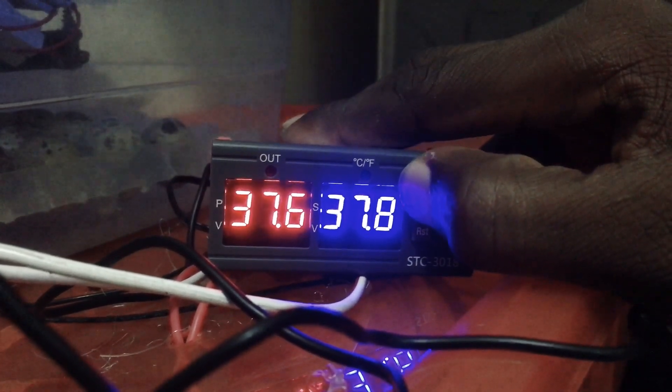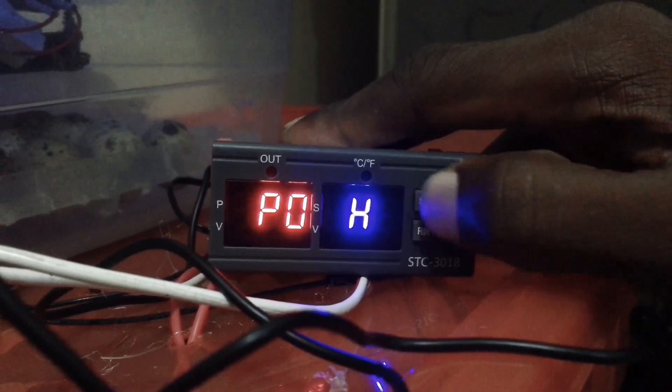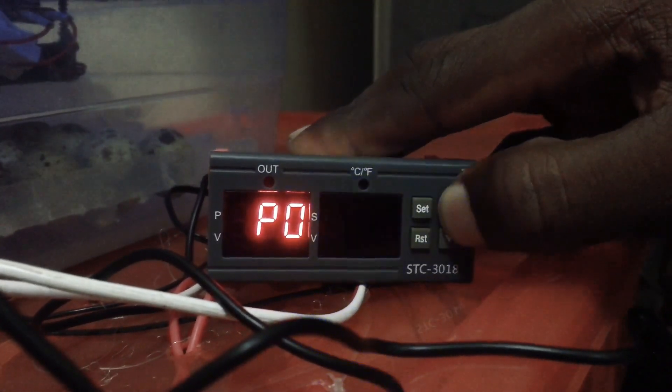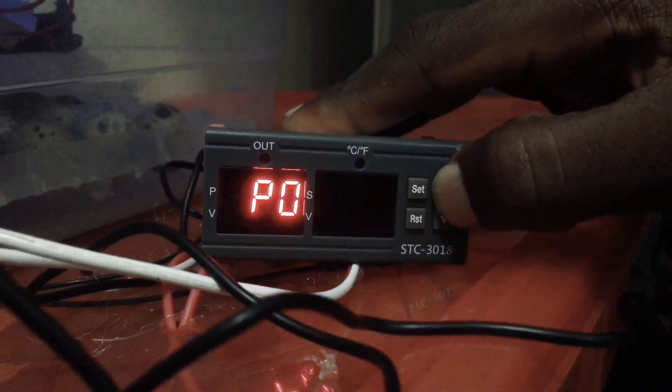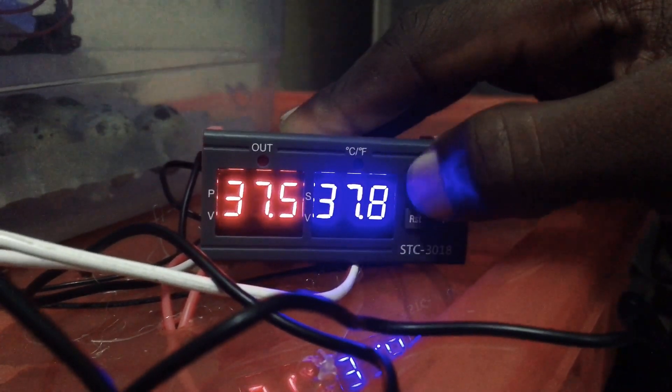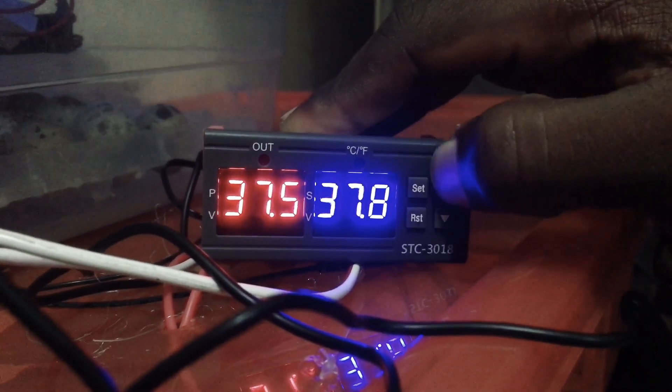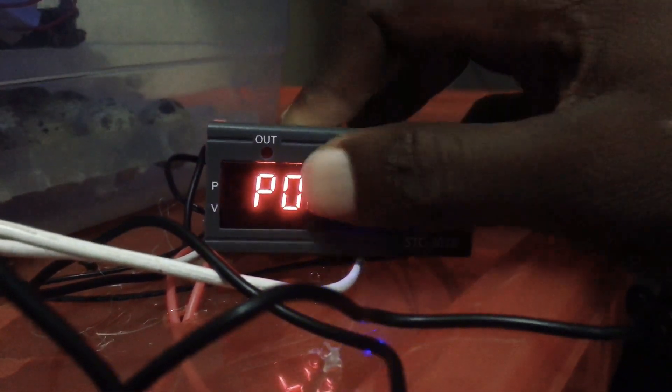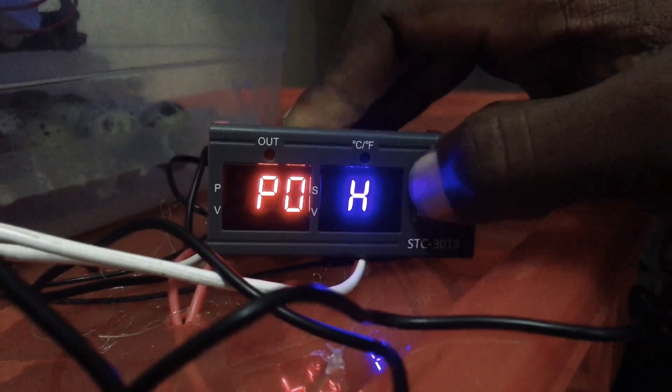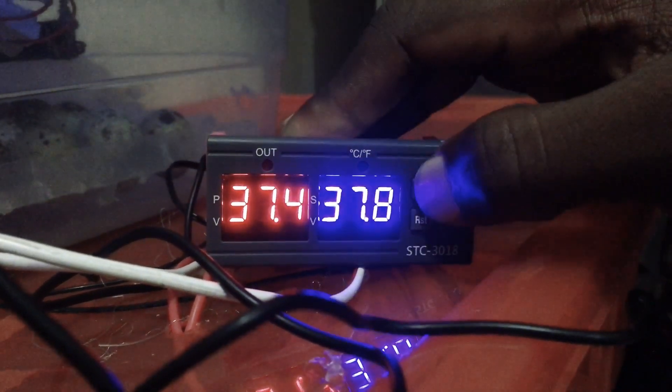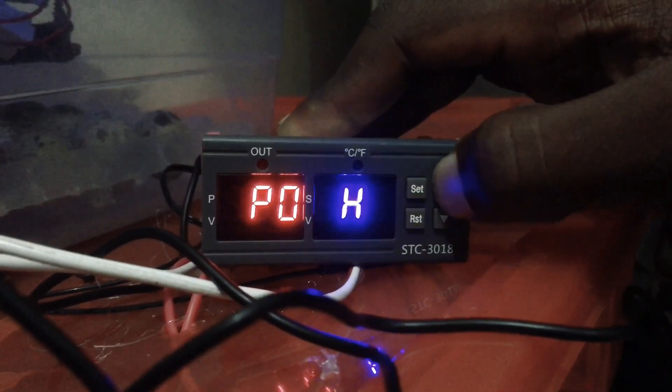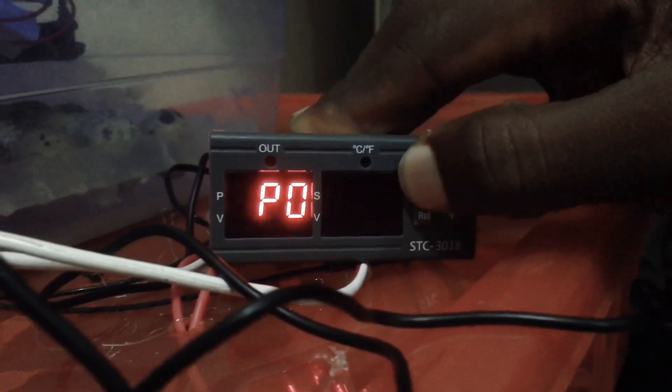The blue side should be on H - that's heat or hot. It shouldn't be on C because it's an incubator, it should always be on H. So we press and hold, P0 shows up. You press again, and press again. You set it to H.